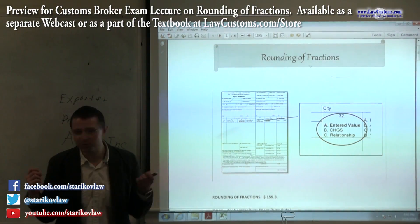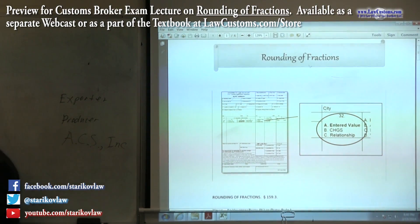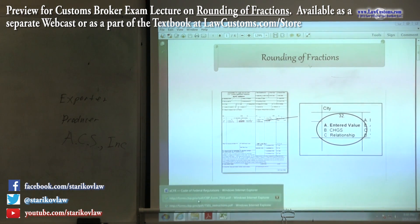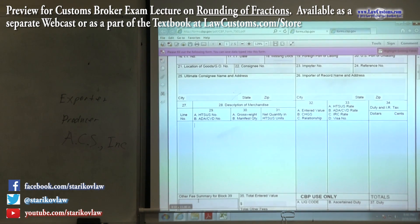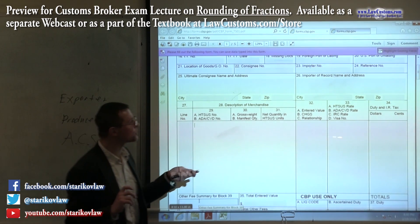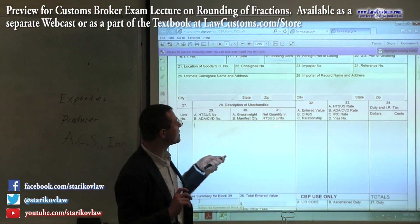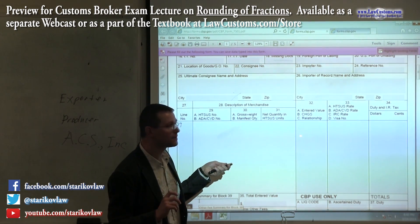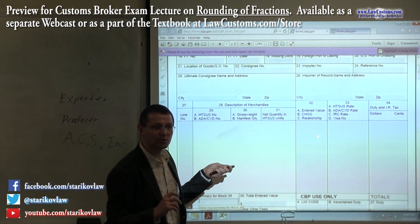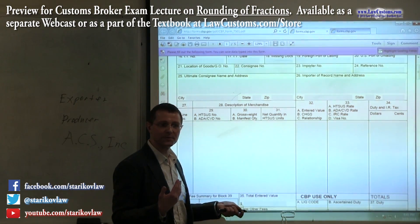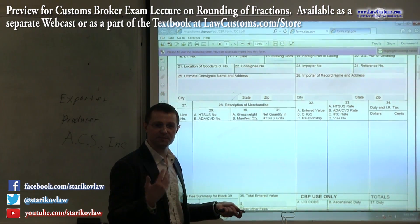Whenever you make a report on CBP Form 7501, you need to declare a value. You need to report something like $6,000.65.